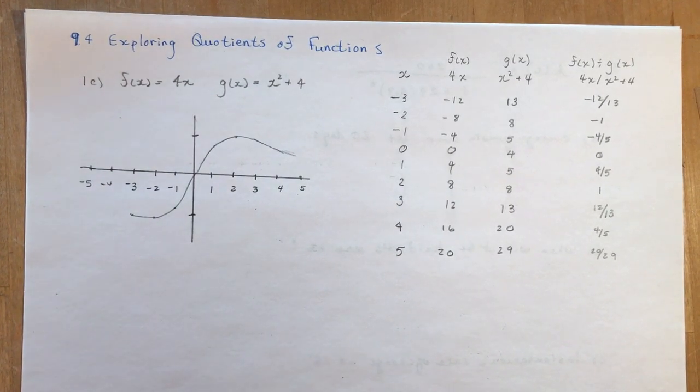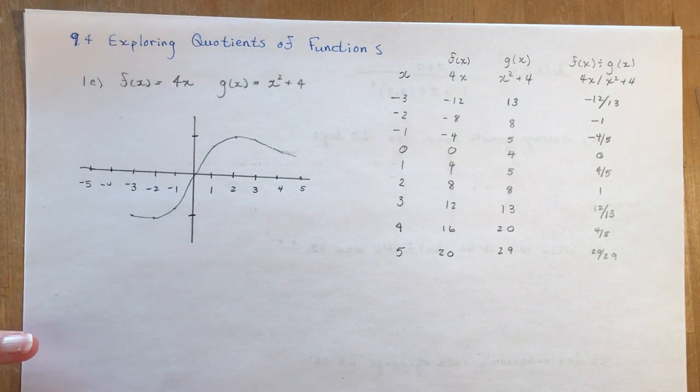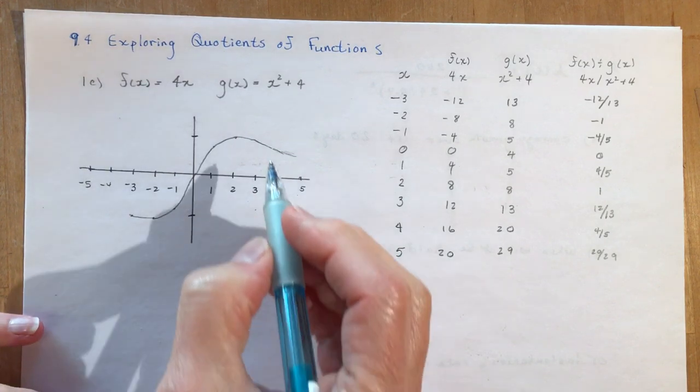9.4 is exploring quotients of functions. By now you're figuring out that this stuff isn't very hard, right? We're doing the same thing over and over again, only now we're going to divide. Seeing how I hadn't actually done a graph for you, I thought I would show you how you would go about doing this if you didn't have access to using your calculator. Some of them are a little more challenging; this one was fairly basic, but you still have to look at what happens at the ends of your graph as you're approaching infinity.